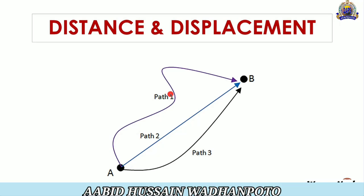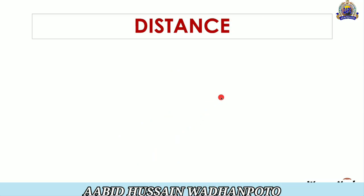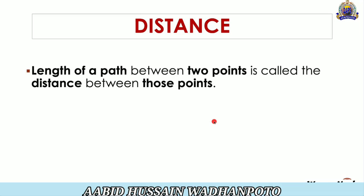In Path 1, the body is moving with different directions. In Path 2, the body moves in a straight line. In Path 3, the body moves in two or three directions — there is no particular direction in Path 3 either, because it is changing the direction of its movement. Simply, the length of a path between two points is called the Distance between those points.